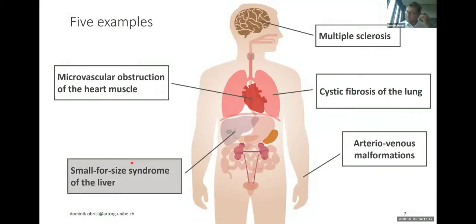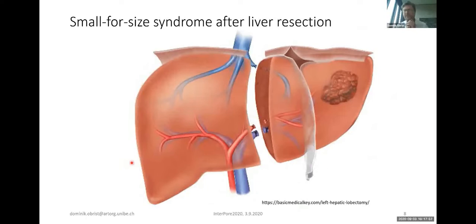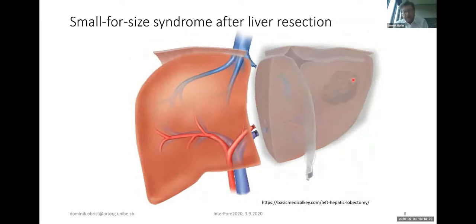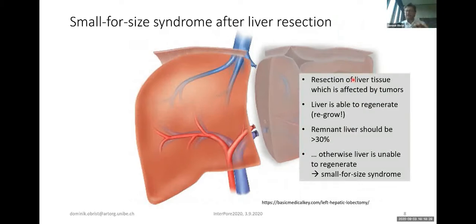The second example is Small Forsyth syndrome of the liver. The liver is a large, heavily perfused organ — approximately 20% of the whole bloodstream goes through the liver. If you have liver cancer with a tumor, there is a treatment that works quite well: liver resection. You cut off the piece of the liver with the tumor in it. The liver is an organ that can regenerate — it will grow back to its normal, original size in the course of weeks to two months. However, this only works to a certain limit. The remaining piece of liver should be at least roughly 30% of the original. If you cut off too much, the liver cannot recover and you run into Small Forsyth syndrome.